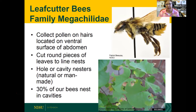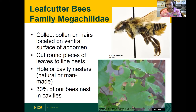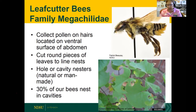Leafcutter bees are in the family Megachylidae, and you can see the hairs on the underside of the abdomen. These bees have a unique behavior — they cut round circular pieces off leaves from different trees and plants to provision their nests, lining them with the cut leaves. They have very strong mandibles. About 30% of our bees nest in some sort of cavities — either the ground, pithy hollow stems, or other structures. We recommend leaving some last year's perennial flower stems for these bees.